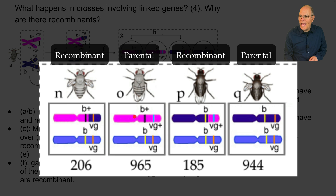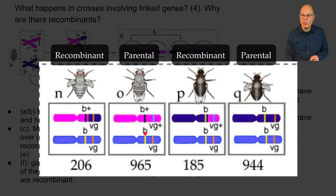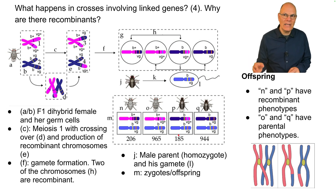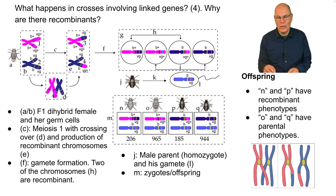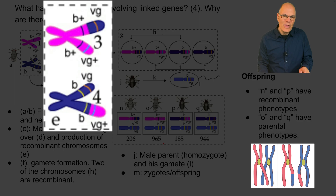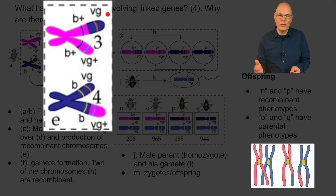Offspring O and Q are parental phenotypes: O is gray body with normal wings, and Q is black body with vestigial wings. There are so many more parentals than recombinants because crossing over happens at a rate dependent on the distance between alleles on the chromosome. This frequency — approximately 17% — represents the distance between the B allele and the VG allele on fruit fly chromosomes.